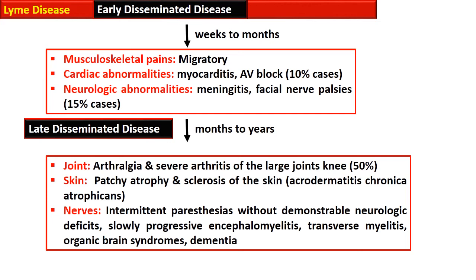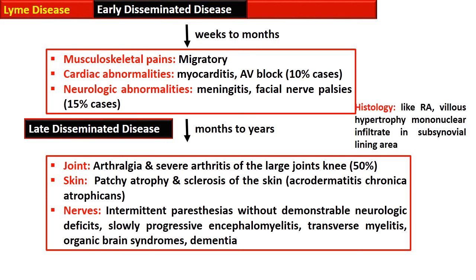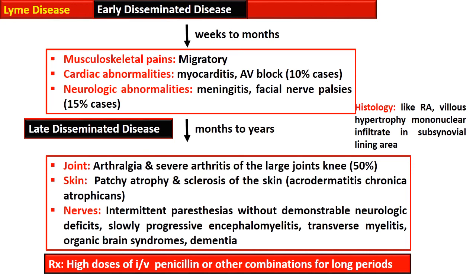The neurological system exhibits intermittent paresthesia without demonstrable neurological deficit, progressive encephalomyelitis, transverse myelitis, organic brain syndrome, and dementia. In the late disseminated stage, histology of the synovium is indistinguishable from that of rheumatoid arthritis, with villous hypertrophy and mononuclear infiltrate. Treatment of this late stage involves high doses of intravenous penicillin or other combination antibiotics for a longer period.